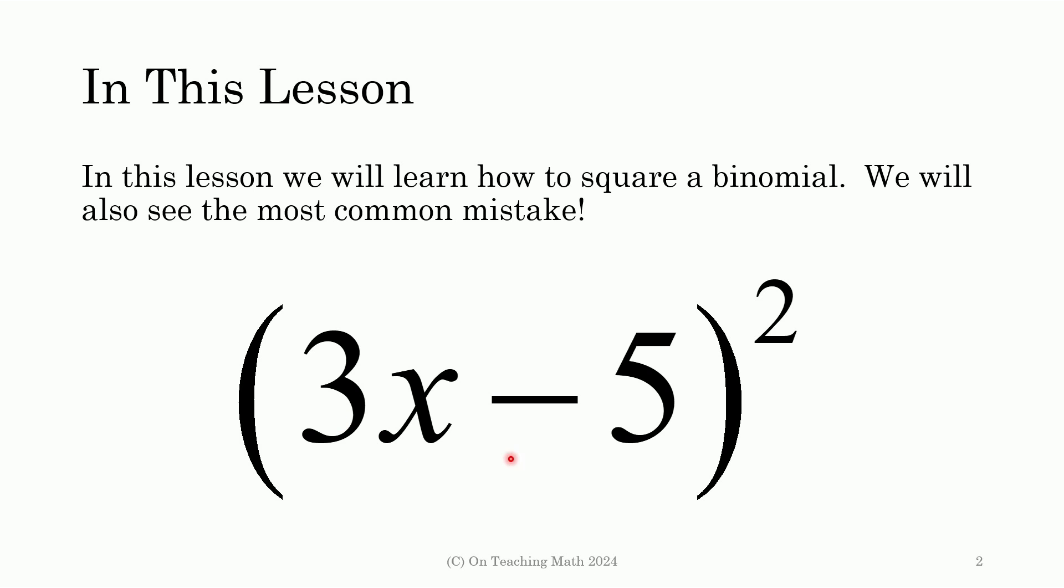Now, in case you forget, a binomial is two terms, like 3x and negative 5, and they're being squared. I'm going to show you how to do it, show you a shortcut, and show you a common mistake so you can avoid that kind of nonsense, right?